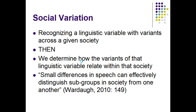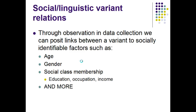You may be thinking that all of this is very interesting, but how does the linguistic variable relate to sociolinguistics? If you are able to recognize a linguistic variable with variance across a given society, then you can determine how the variants of that linguistic variable relate within that society. As Wardha writes, small differences in speech can effectively distinguish subgroups in society from one another. Through observation and data collection, we can posit links between a variant and socially identifiable factors such as age, gender, social class membership, and more.